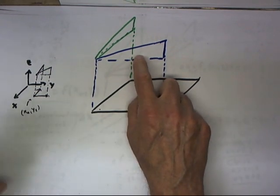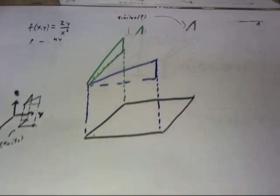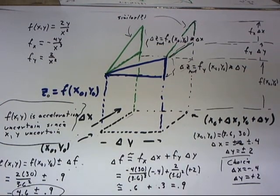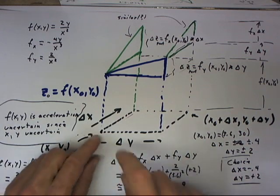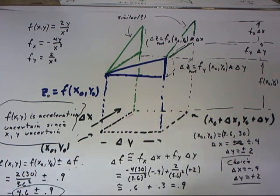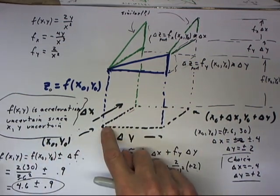Moving from this picture to a more complete picture, we have this. Now here's our delta y by delta x rectangle. Here's our point x0, y0.